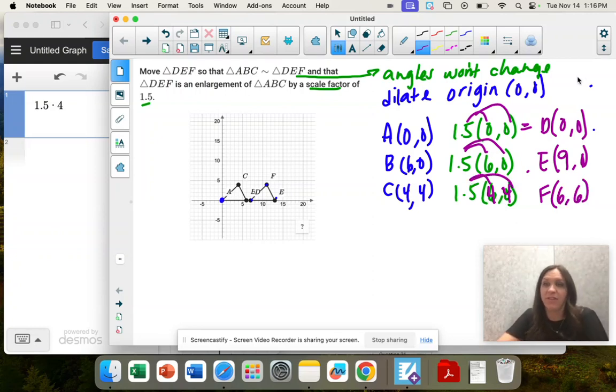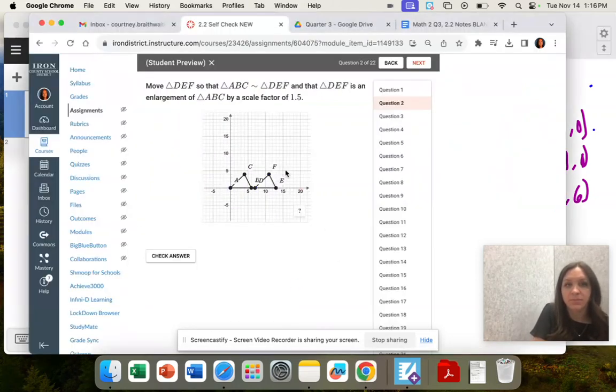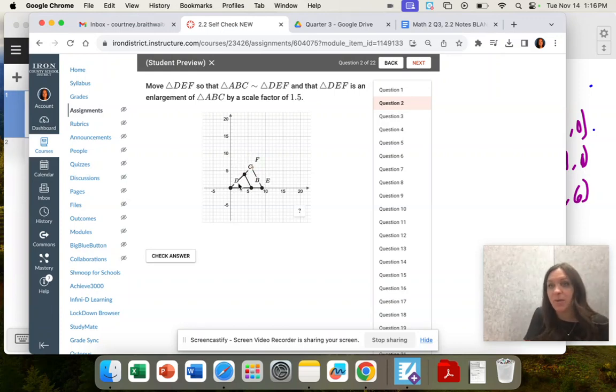And then we just have to graph them. So (0,0) will be D. E will be (9,0). And then F will be up at (6,6). All right. So there's our triangle, just dilated by 1.5.